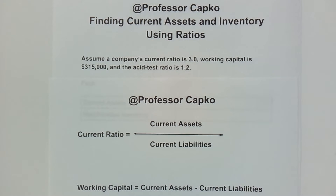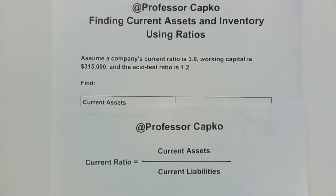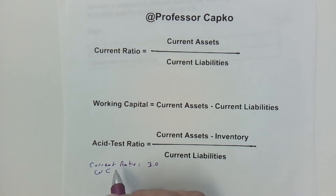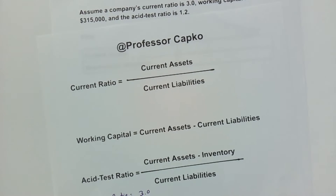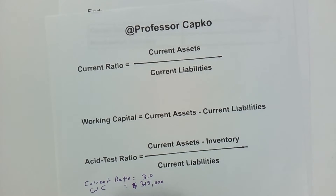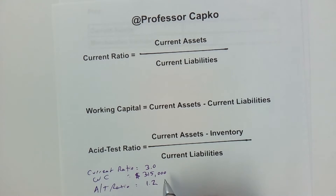We've been given the current ratio is 3.0. And then we've been given that the working capital is $315,000. And the last piece of information we're given is the acid test ratio, and we're told that that is 1.2. I just copied it over here so we have it handy, and it'll be easier to work out these problems.